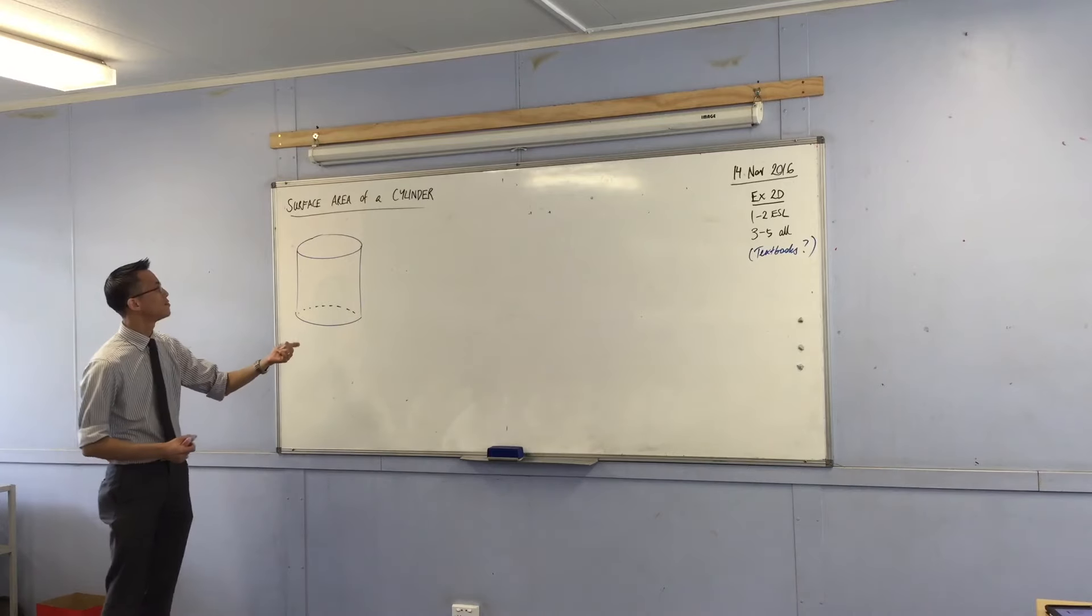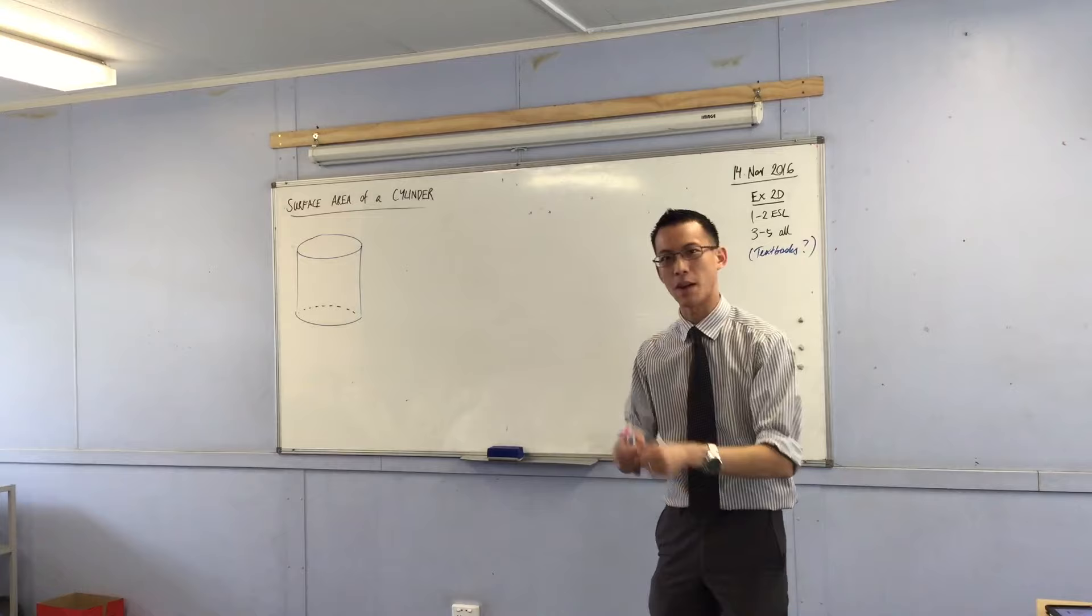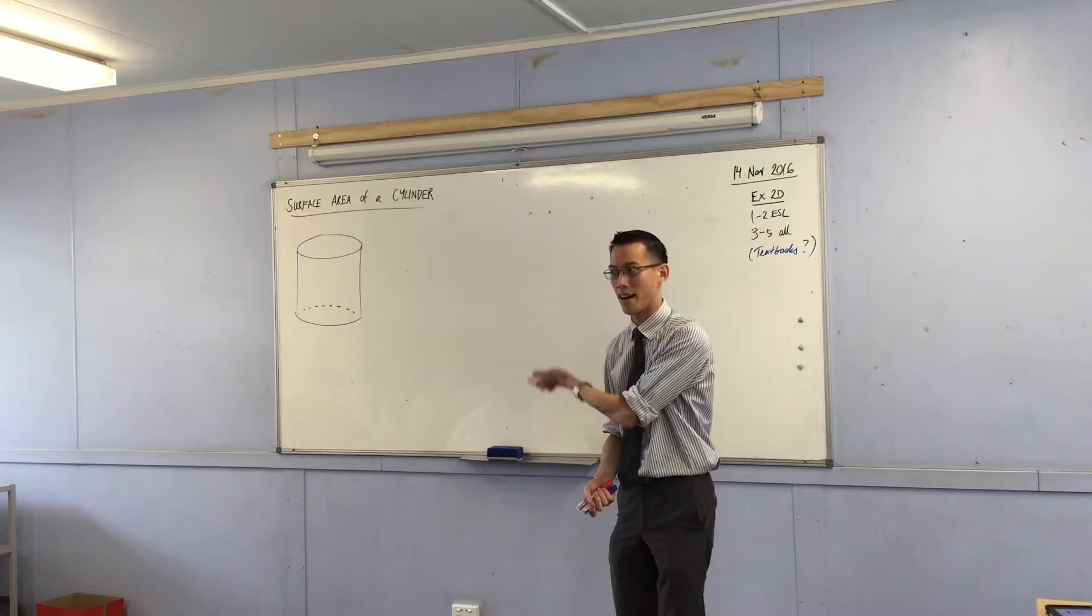To work out anything about a cylinder, we'll look at volume later on, but for today we're just thinking about surface area. This is how much space the whole surface would take up if I unfolded it.